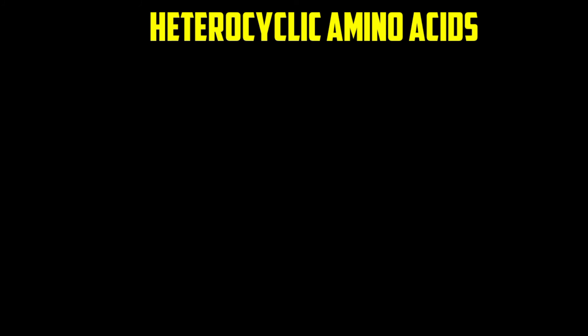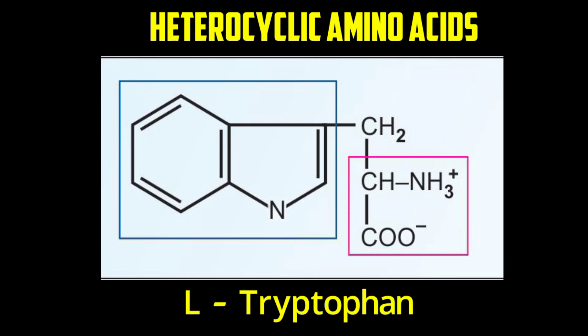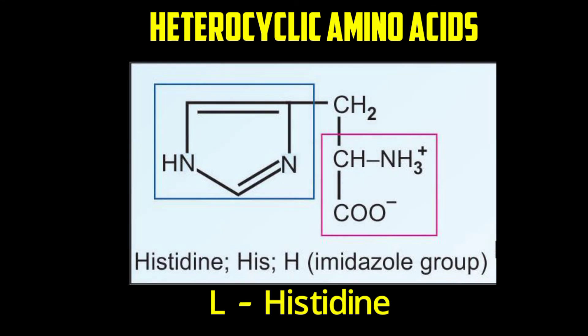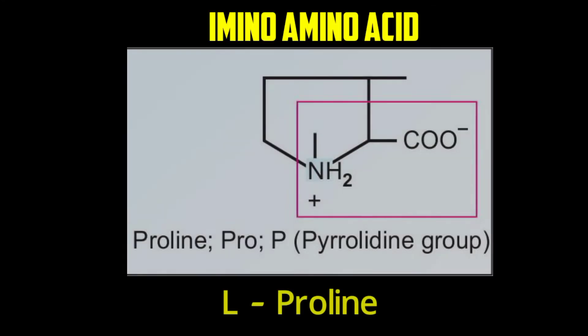Heterocyclic amino acids are cyclic compounds that contain nitrogen and other elements in their cyclic structure. Tryptophan has the general amino formula bonded to a carbon, bonded to a benzene ring fused to a pentagonal ring that contains nitrogen — that is the indole ring. Histidine has the general amino formula bonded to a carbon connected to a pentagonal shape with two nitrogen atoms in it. Finally, proline is the imino acid.